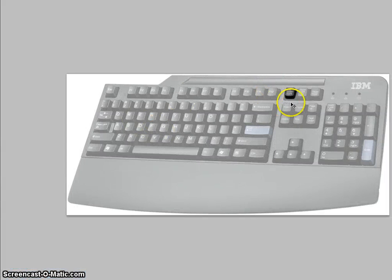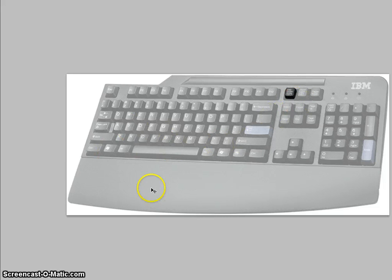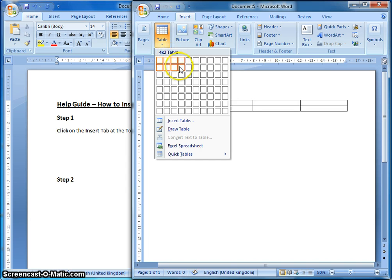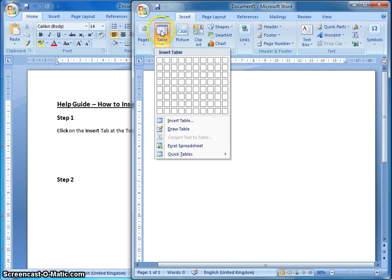If you can't remember where the print screen key is, look carefully for a key that might say PRTSCR on it, for print screen — it might actually say the four words 'print screen'. If you're using a laptop, it might be somewhere different, so you'll have to look carefully for that button. On a standard Lenovo IBM keyboard, the print screen button is this button here. So what I'm going to do is select this table option, select how many rows and columns I want, and then press the print screen button.